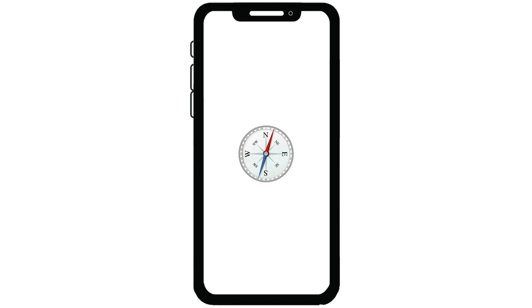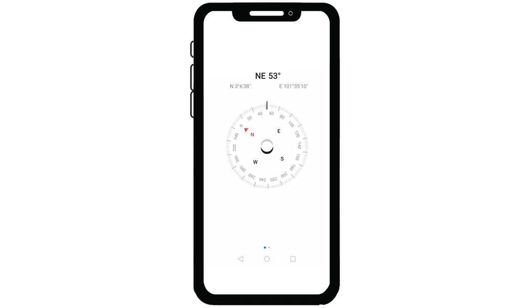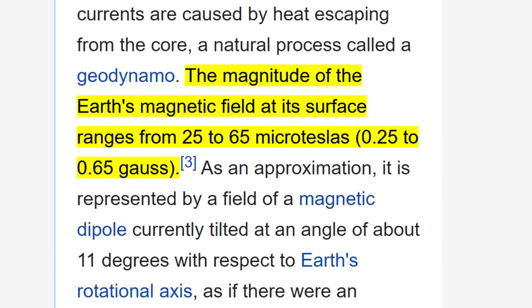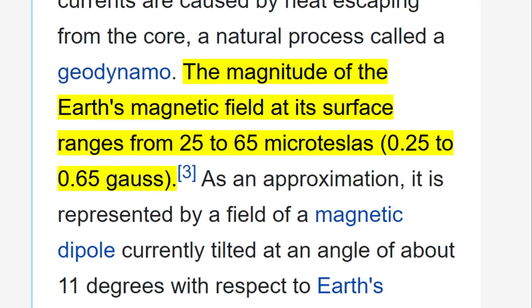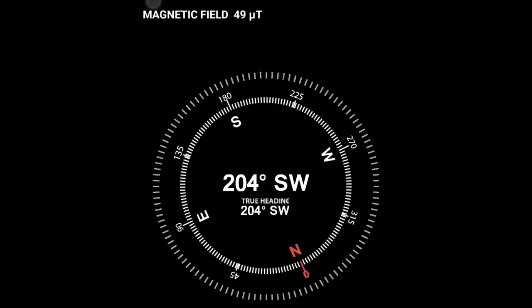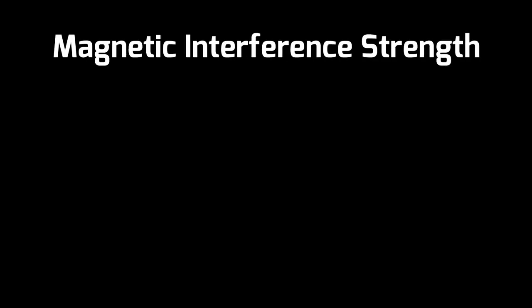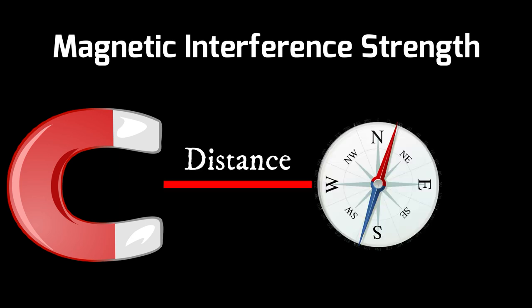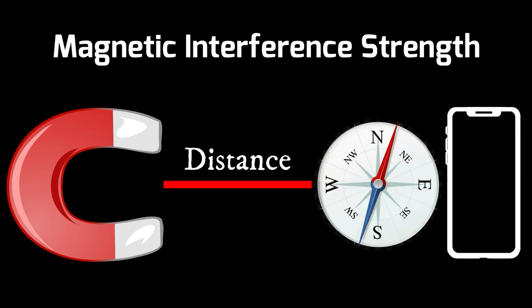Most mobile phones and tablets have a magnetic sensor built in to measure and provide a compass direction. According to Wikipedia, the common surface magnetic field is about 25 to 65 microteslas. I usually get readings of around 50 microteslas using an app, which I'll talk about later. The magnetic interference strength depends on the object producing the interference and the distance between that object and the compass or device.